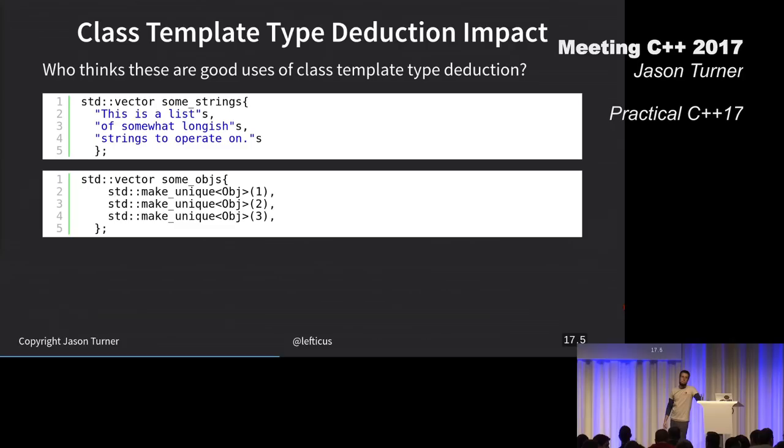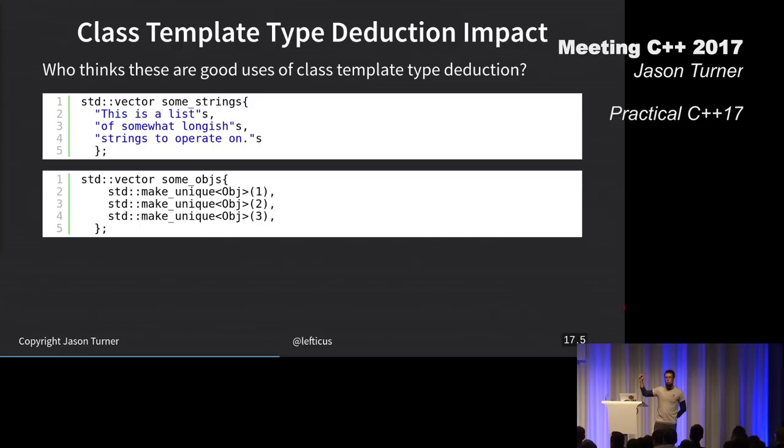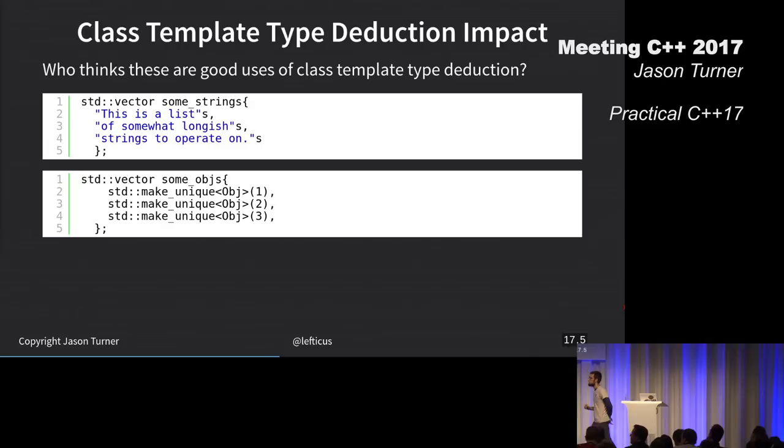Who thinks either of these is an acceptable thing to write in your code? I would say it's acceptable, but it doesn't buy you anything. If I saw this in a code review, I wouldn't mind. But even if I saw the standard version, I wouldn't mind.